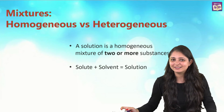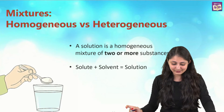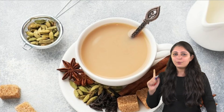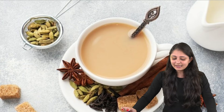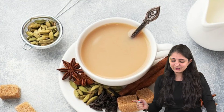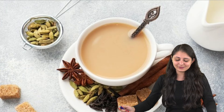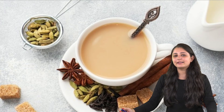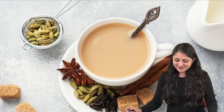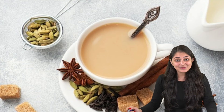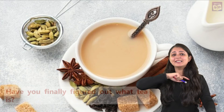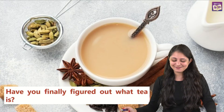Now, one glance at tea and you can easily say it appears to be uniform — it appears to have homogeneous composition. But the light-scattering property says otherwise. So what do you think — is it heterogeneous or is it homogeneous? Put on your thinking caps!